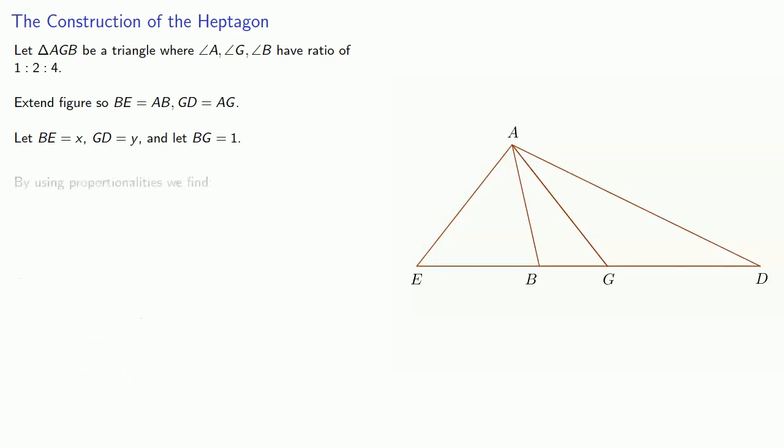Now, by using proportionalities, we find that x squared is equal to 1 plus y. And y squared is equal to x times x plus 1. And Abu Sal recognized that the first curve defines a parabola and the second a hyperbola.